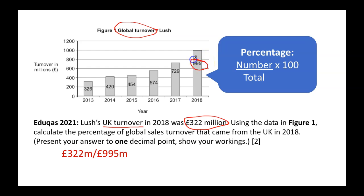We've got 322 million as the UK figure divided by 995 million, which gives us a decimal. We then multiply by 100 because it's asking for a percentage. Be really careful: give it to one decimal place and include the percentage sign on the end.